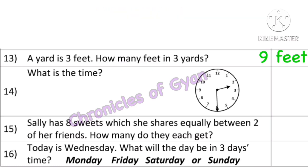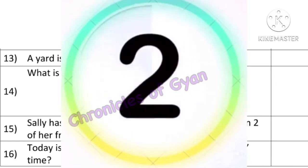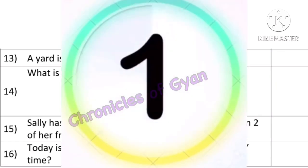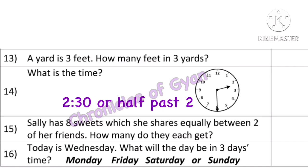Question 14: What is the time? You can see the clock shown here. The hour hand is at 2 and the minute hand is showing 6. That means it's 2:30, or half past 2.